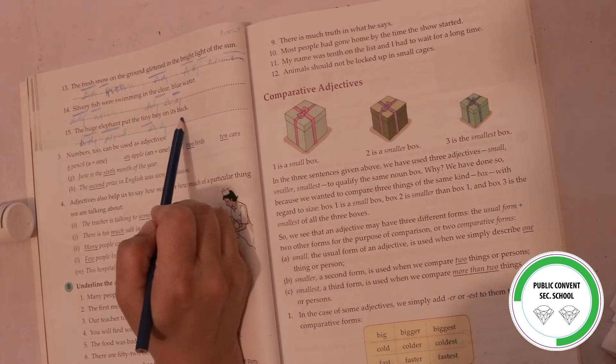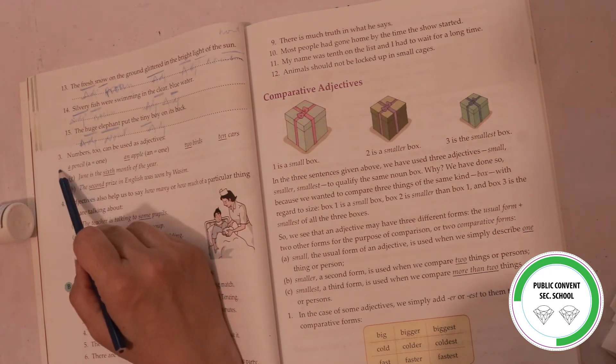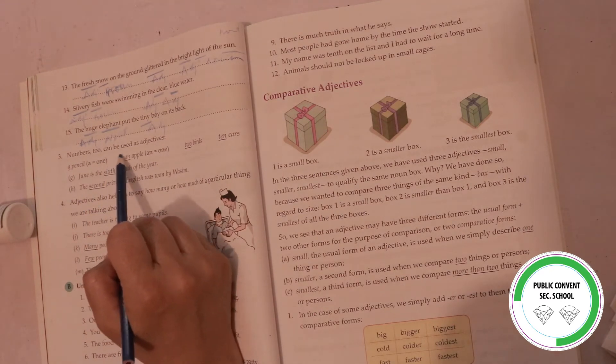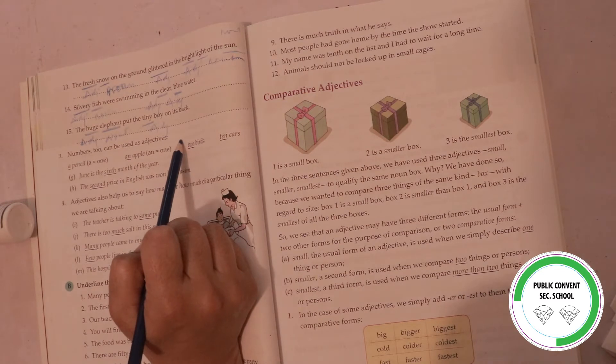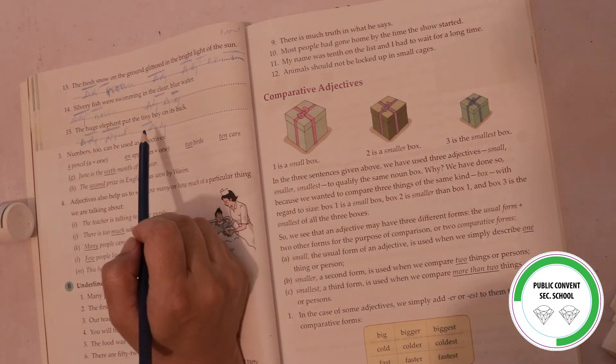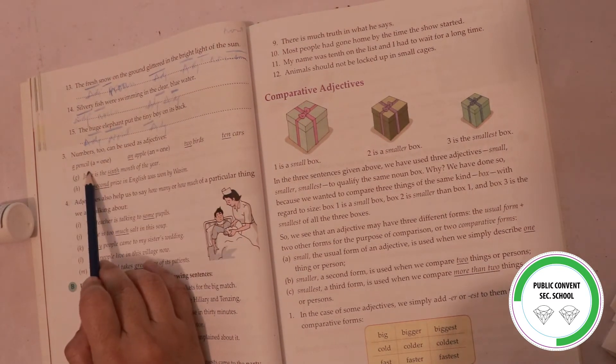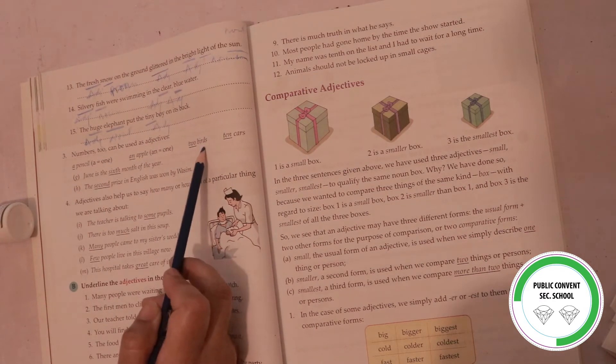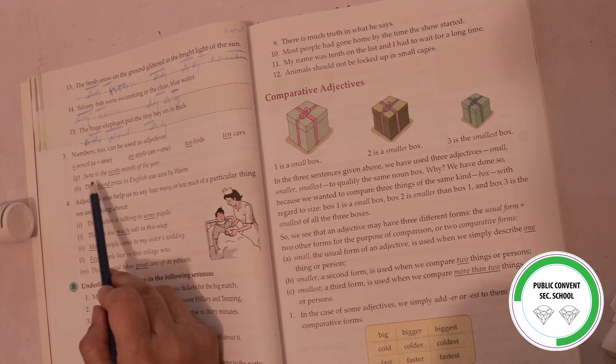Now let's see number three. Numbers can be used as adjectives. Numbers can be used as adjectives, such as a pencil, an apple, two birds, ten cars, and June.